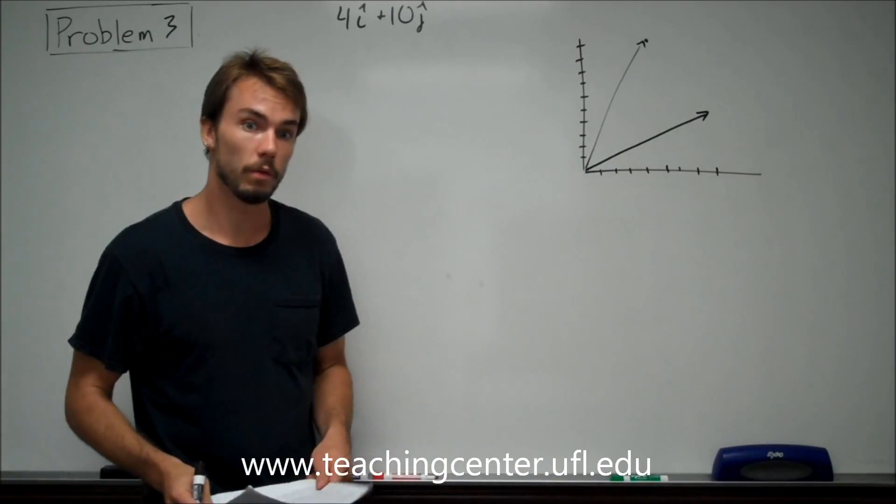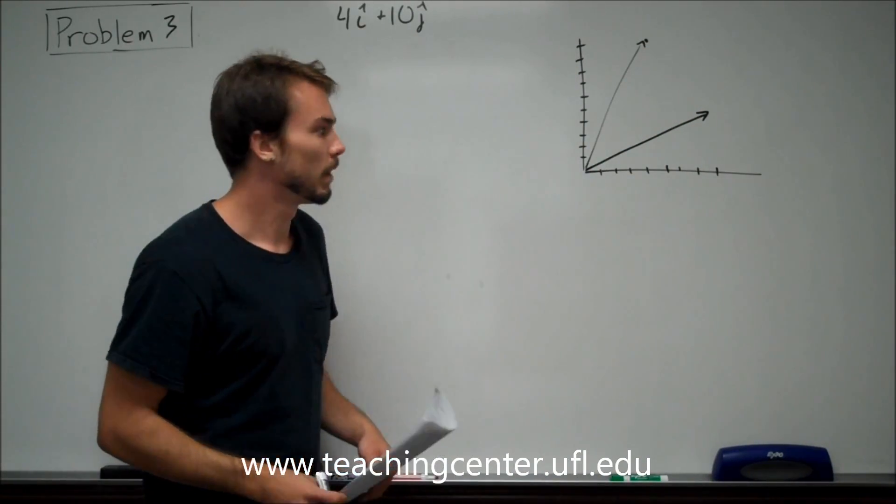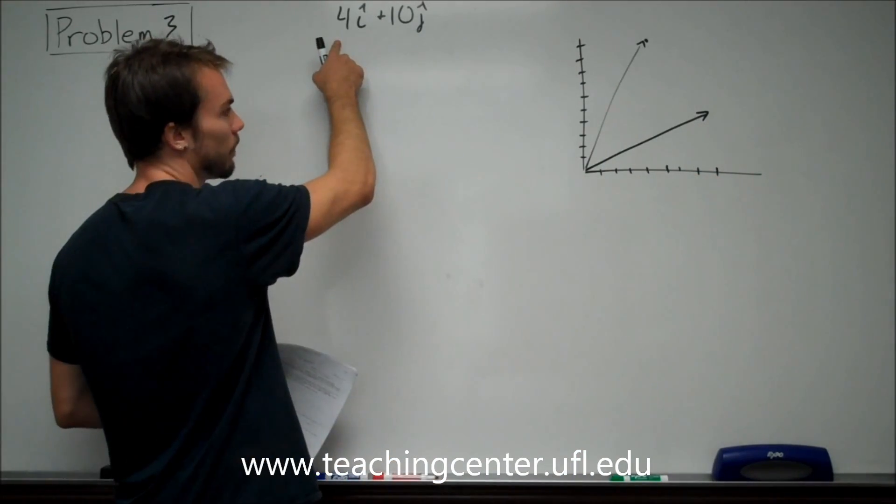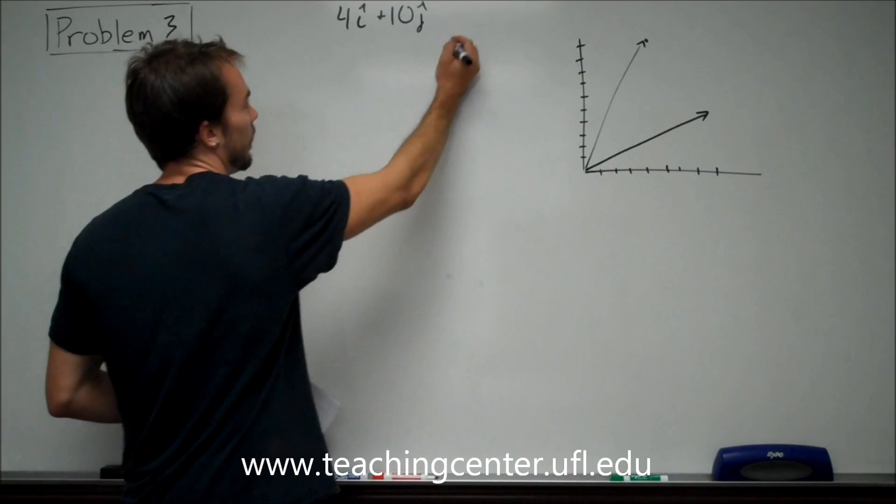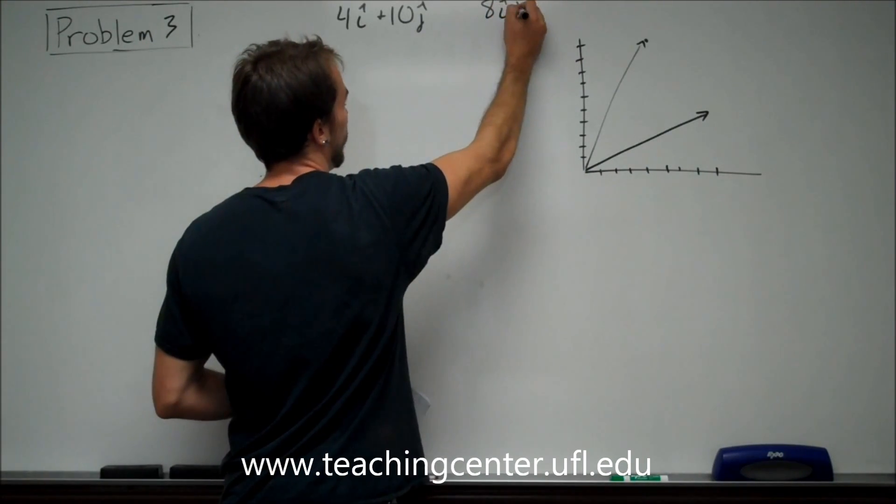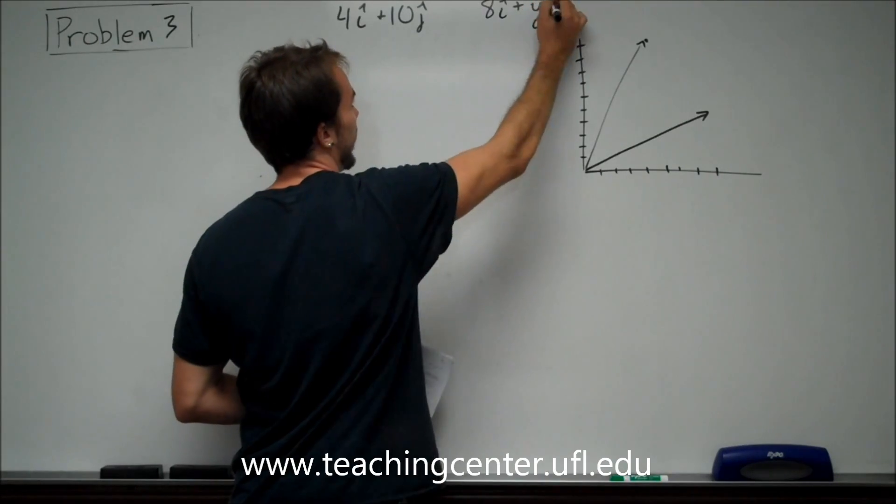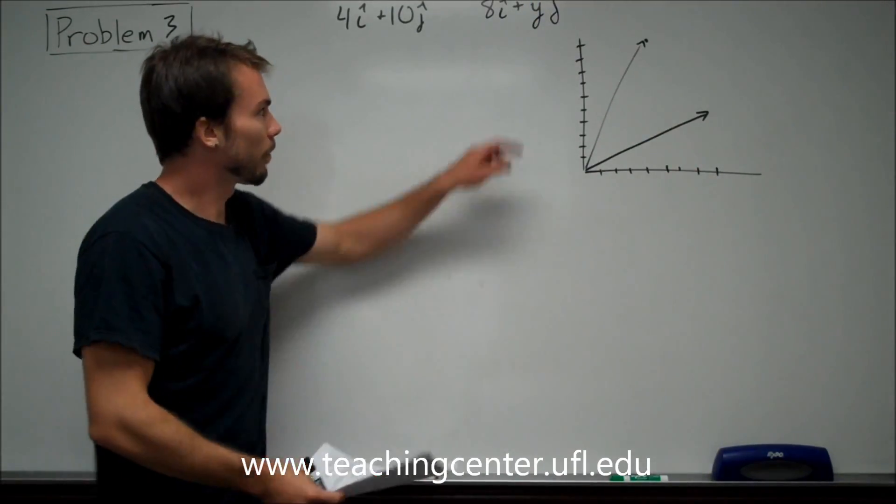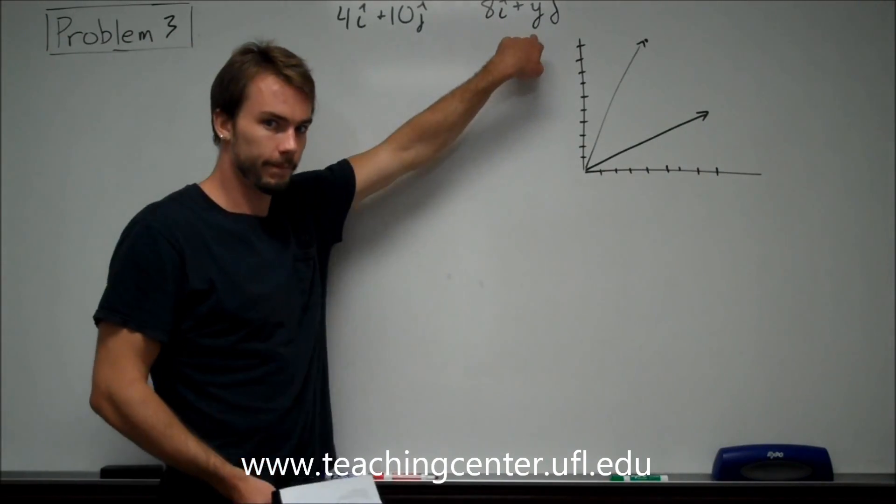Regardless of any of that, all we're doing is this. And if we have the same vector, what we know is we have the same magnitude. They want to know the new Y component. So this is the first equation. The next one that we're transforming it into is going to be 8i plus some value Yj. We're looking for that Y value right there. That's our variable.